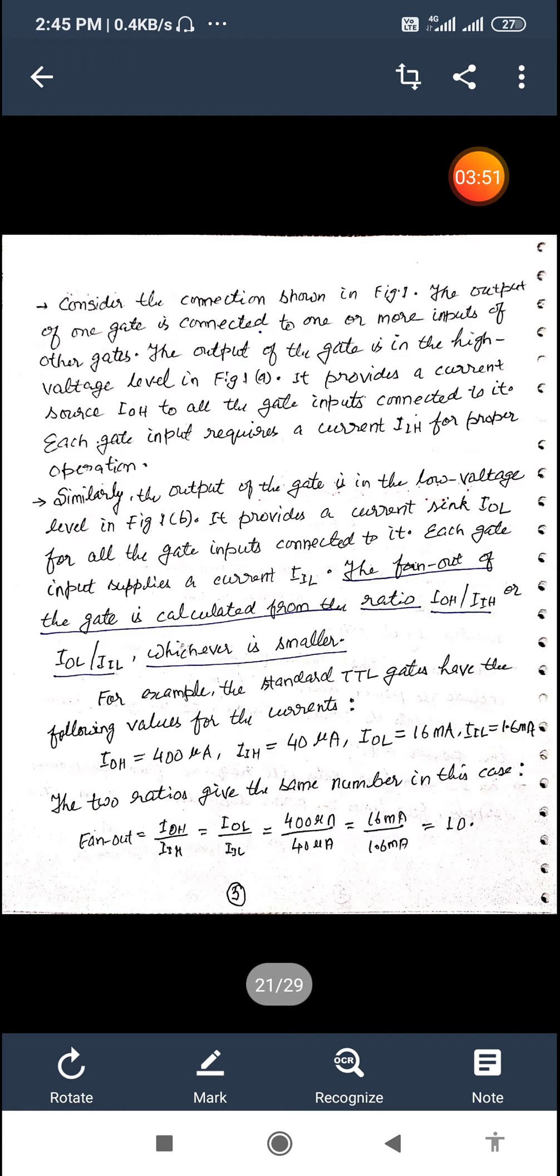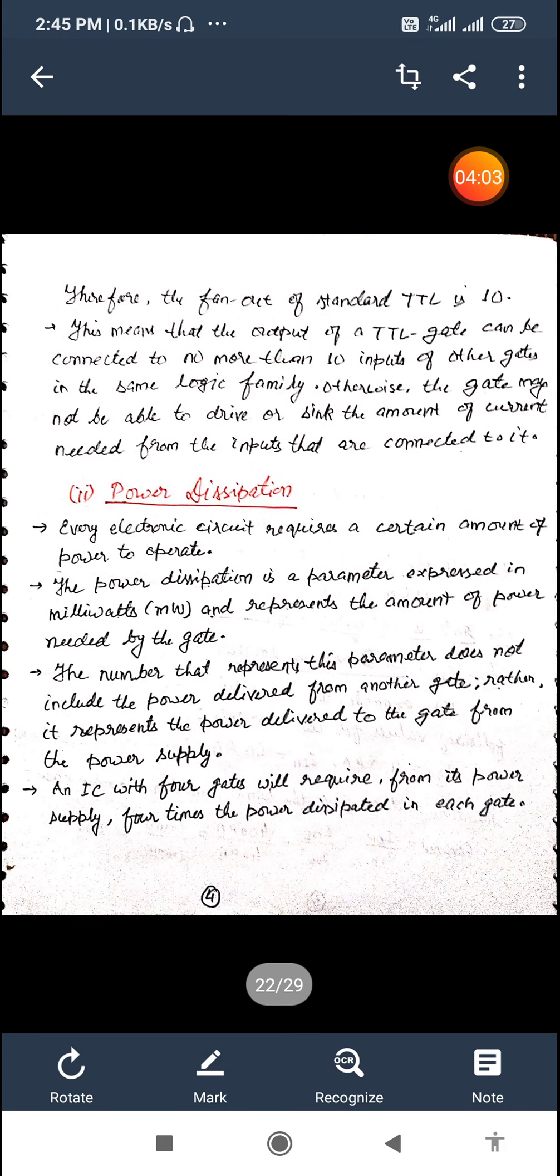The two ratios give the same number in this case. So we can determine the fan out whether it is for a high level or for low level both comes as the value is equal to 10. So we can say that therefore the fan out of a standard TTL is 10. This means that the output of a TTL gate can be connected to no more than 10 inputs of other gates in the same logic family, otherwise the gate may not be able to drive or sink the amount of current needed from the inputs that are connected to it.